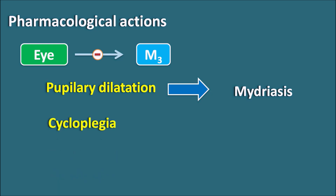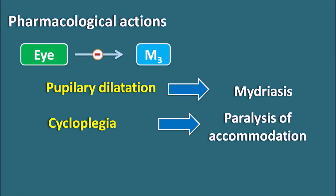Anticholinergics can also produce cycloplegia — paralysis of accommodation where vision is fixed at a particular distance and does not respond to acetylcholine as the cholinergic receptors are blocked. Atropine produces both mydriasis and cycloplegia. Whenever both actions are required, atropine is used — particularly in children during eye examination, where the cycloplegic effect is required to fix vision at a particular distance.